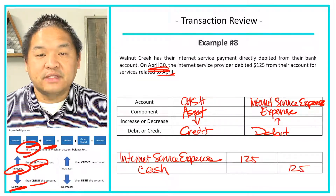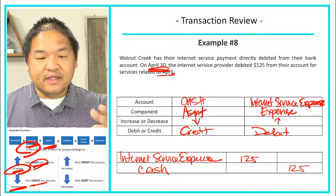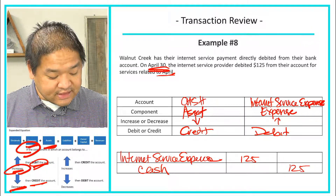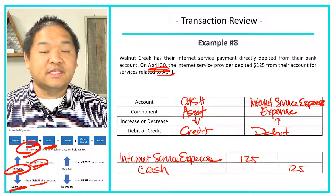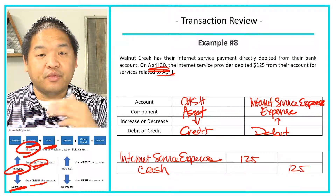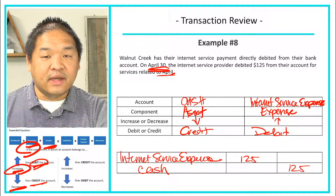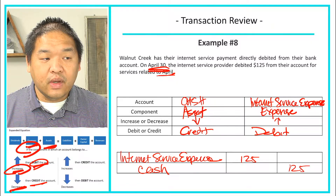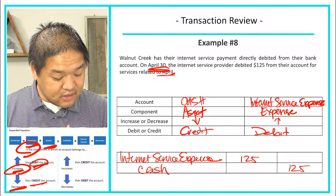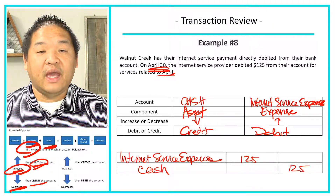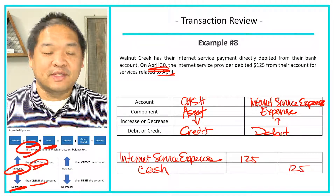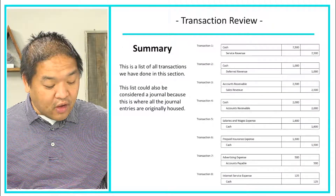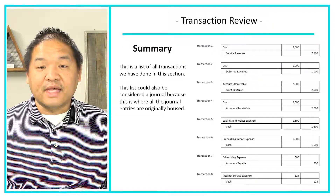In this lesson we looked at all the expense options: an expense happening at the same time cash is given, a situation where we prepaid an expense and will expense it later, and lastly an example where we incurred the expense but haven't paid for it — the advertising expense example. Here is a summary of all the transactions done in the last two lessons.